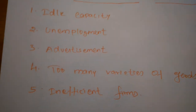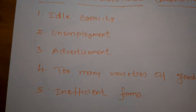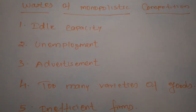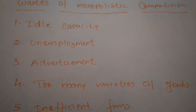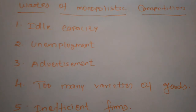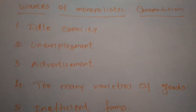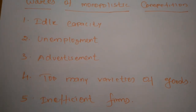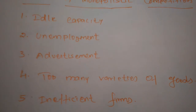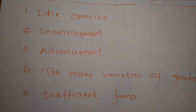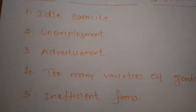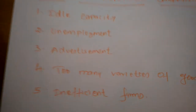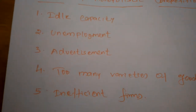Under monopolistic competition, firms produce less than the optimum output, so even if there is more chance to produce, monopolistic firms never use all resources. When they are not producing more commodities, job opportunities decrease. As a result, the productive capacity is not used to its fullest extent. If producers want to produce more, more labor is required — if they do not produce more, less labor is needed, leading to unemployment of human resources.